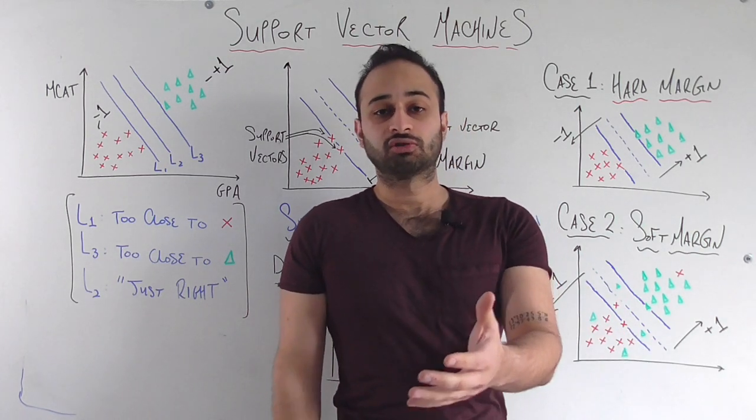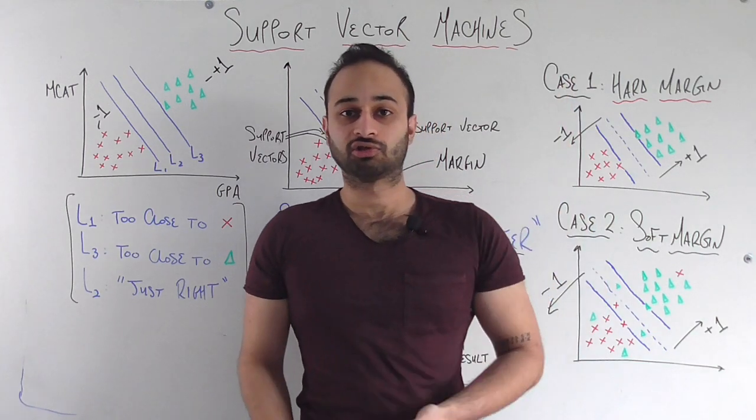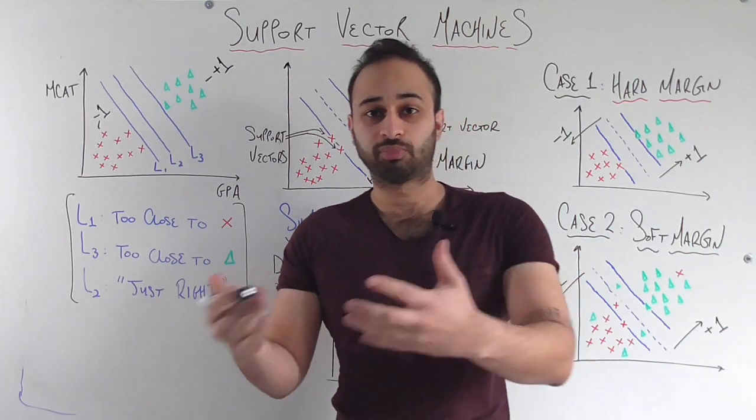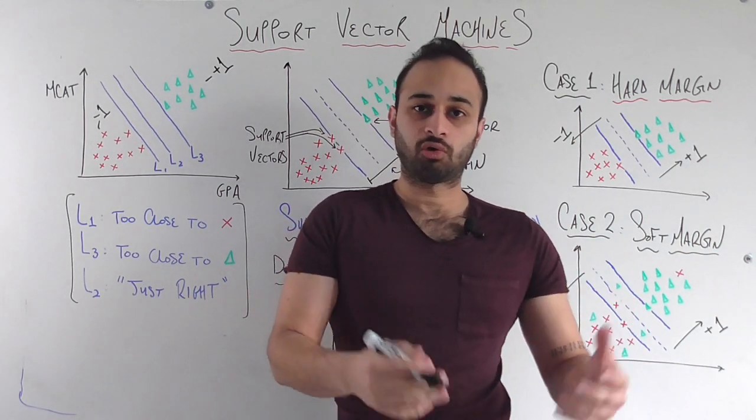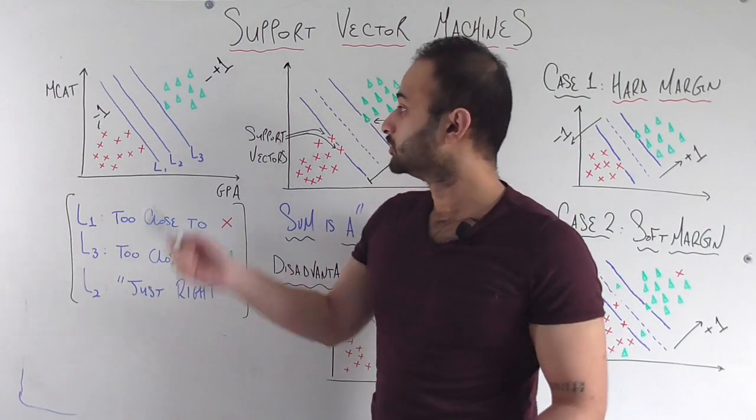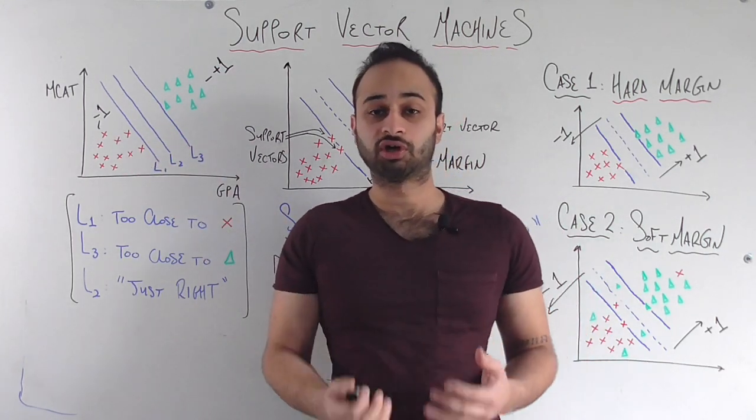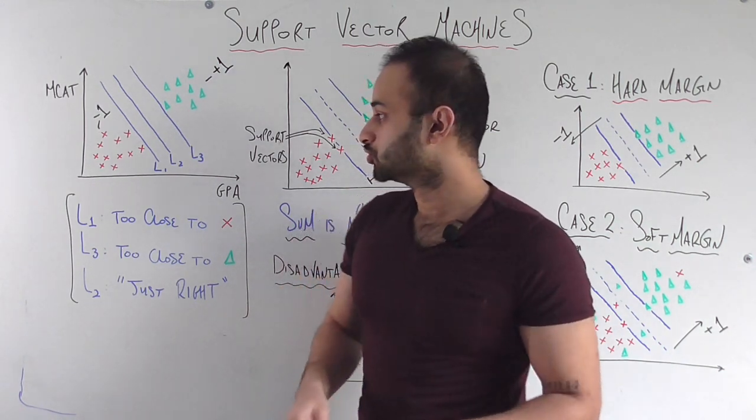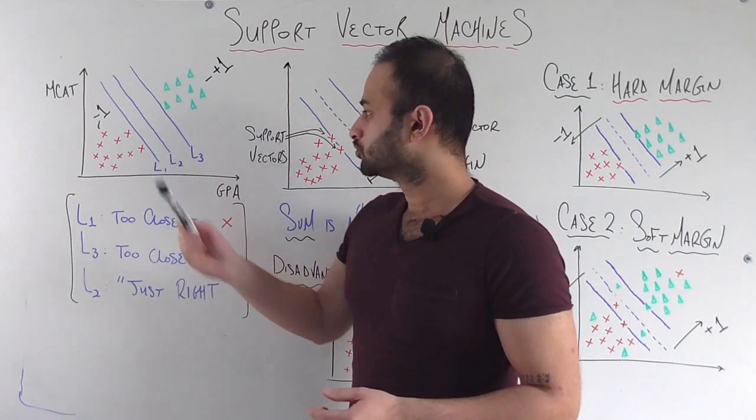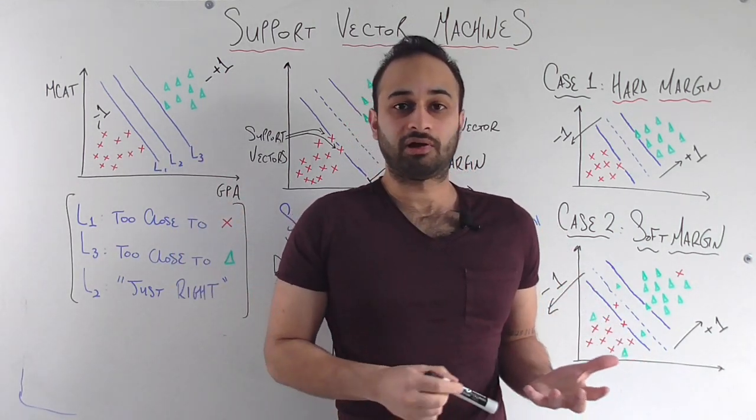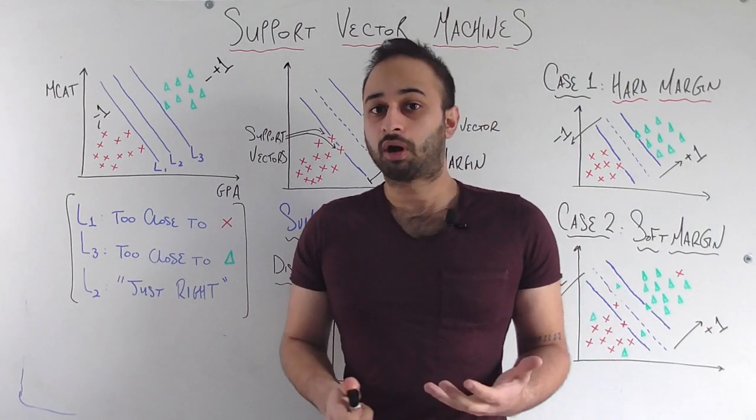But now the question for you is, let's say we want to draw a line. So since we're just working in two dimensions, we're going to draw a line. But in higher dimensions, this becomes a plane and a hyperplane, and so on. But just to keep things simple, let's say I ask you to draw a line between these two classes. So consider this your training data. Which line would you draw? So I've drawn a couple of candidates here. Would you draw a line L1, L2, or L3?